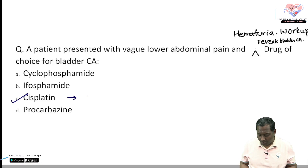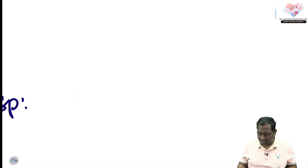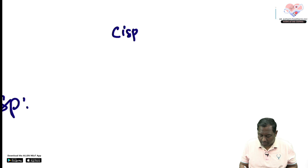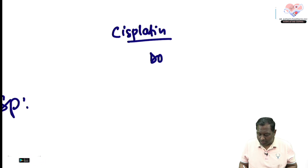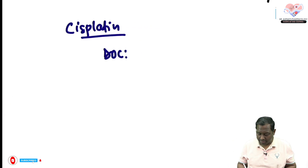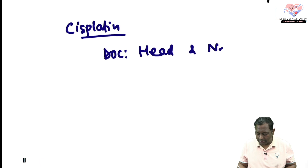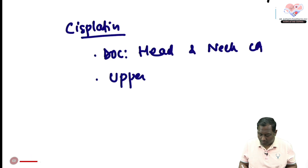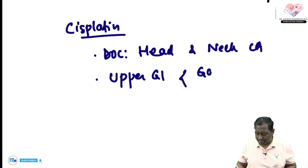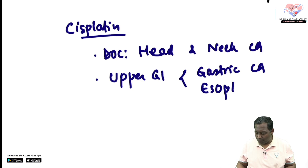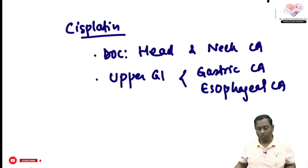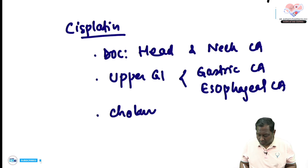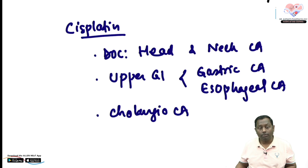Cisplatin is a cell cycle non-specific anti-cancer drug. It is considered the drug of choice in many scenarios: head and neck cancer, upper GI carcinoma — that is, gastric carcinoma or esophageal carcinoma — and also cholangiocarcinoma.